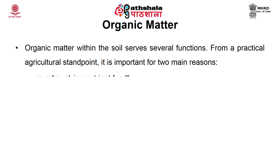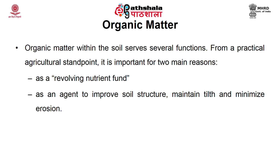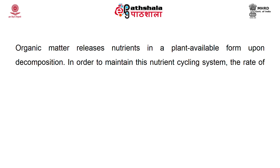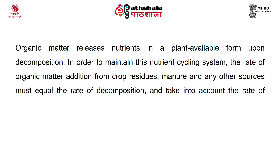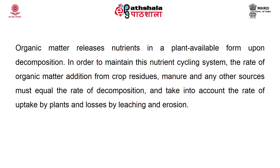Organic matter within the soil serves several functions. From a practical agriculture standpoint, it is important for two reasons: as a revolving nutrient fund, and as an agent to improve soil structure, maintain tilth, and minimize erosion. As a revolving nutrient fund, organic matter serves two main functions. Since soil organic matter is derived mainly from plant residues, it contains all the essential plant nutrients; therefore, accumulated organic matter is a storehouse of plant nutrients. The stable organic fractions adsorb and hold nutrients in a plant-available form. Organic matter releases nutrients in a plant-available form depending upon the decomposition process. In order to maintain this nutrient cycle system, the rate of organic matter addition from organic crop residues, manure, and other sources must equal the rate of decomposition and take into account the rate of uptake by the plant and losses by leaching and erosion.